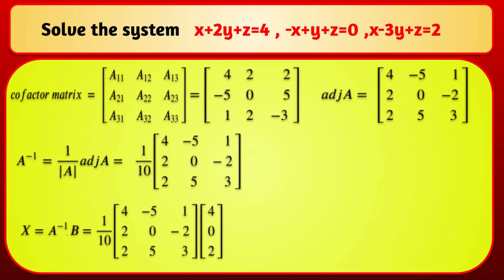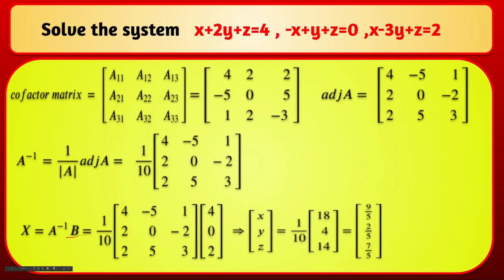Compute X = A⁻¹B = (1/10)·adj(A)·B where B = [4, 0, 2]. The first row gives 4·4 + (−5)·0 + 1·2 = 18. The second row gives 2·4 + 0·0 + (−2)·2 = 4. The third row gives 2·4 + 5·0 + 3·2 = 14. Therefore X = (1/10)[18, 4, 14] = [9/5, 2/5, 7/5], so x = 9/5, y = 2/5, z = 7/5.